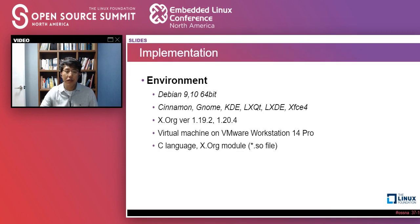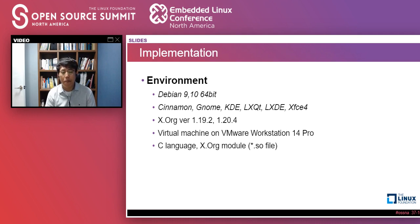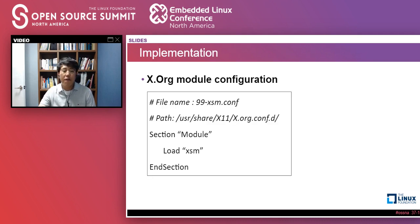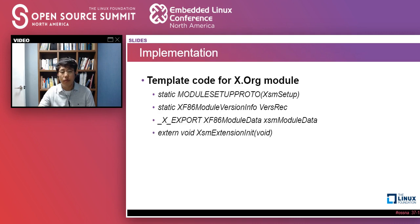I implemented and tested XSM on the target environment. Especially, desktop environments like Cinnamon and GNOME are very important because they caused some errors for XSM — I will explain the details later. This is a configuration file of X.org for XSM. XSM can be loaded if the configuration file is in the correct path. To develop XSM, I needed to know the template code for an X.org module. As you see, there are essential symbols. If you wonder about the details, please check out the XSM source code on the appendix page — it will be useful to make your own X.org module as well.